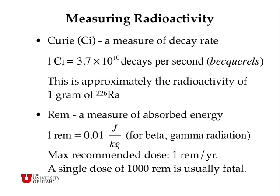The other way of measuring radioactivity is the REM, which is more appropriate for measuring the absorbed radiation energy in biological tissue. One REM corresponds to 0.01 joules of absorbed radiative energy per kilogram of tissue for beta and gamma radiation. For alpha radiation, alpha particles do much more damage, and 0.01 joules per kilogram would correspond to 20 REMs because it does about 20 times more damage. The maximum recommended dose is about 1 REM per year. A dental x-ray gives about 6 millirems, and a single dose of 1,000 REMs is usually enough to kill a human.